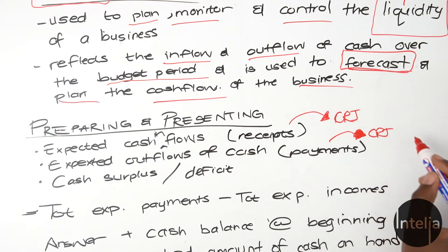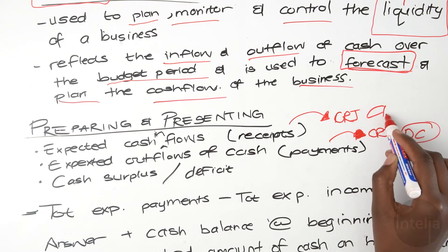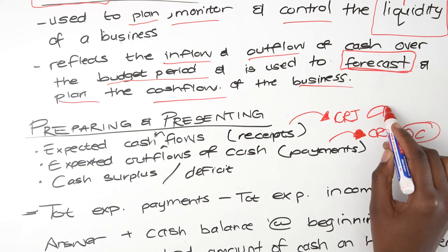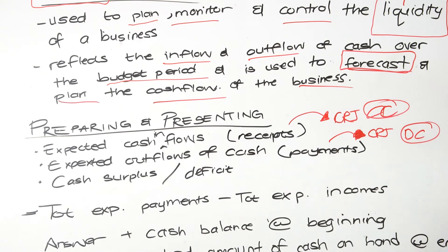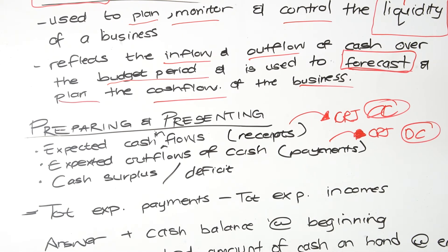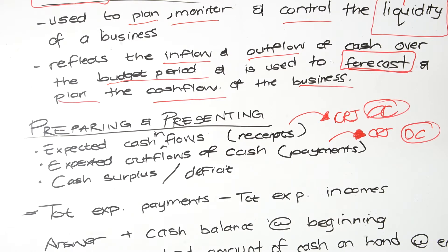Debtors' collection and creditors' collection will be found on the receipts side. After you have these documents laid out and you've done the cash budgeting, we then look into determining whether we realize a cash surplus or a cash deficit — meaning, after budgeting, do we find that our business will have less money or more money in terms of inflows and outflows.